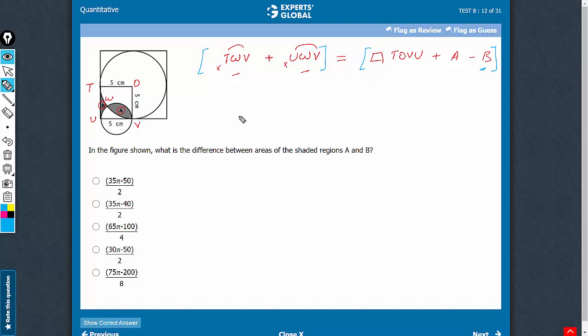This is more of a set theory question. The question is asking us the difference between areas of regions A and B. And therefore, A minus B is what we need.